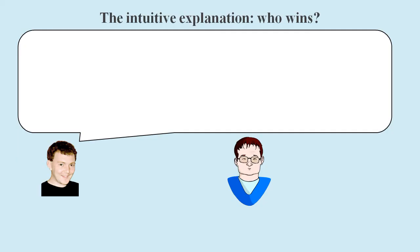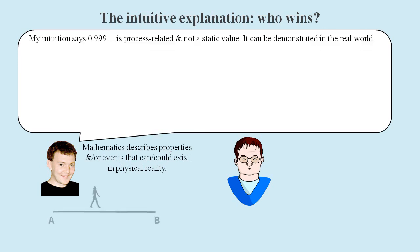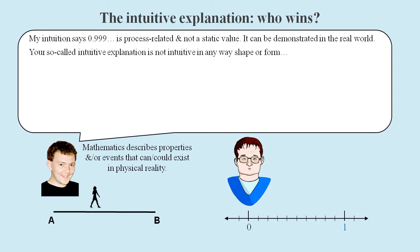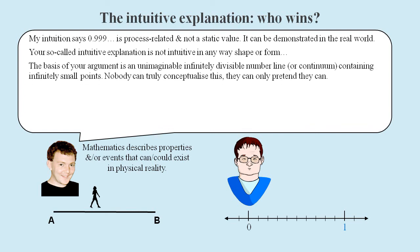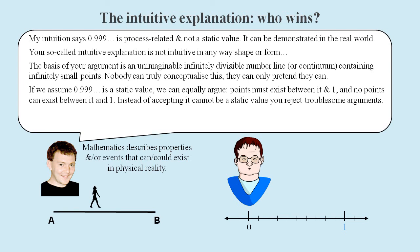So who wins the battle for the best intuitive explanation? As disbelievers, we relate mathematics to physical reality. And 0.9 recurring is process related. Nobody can truly conceptualize infinitely small things. Mathematicians simply reject any troublesome arguments. And they think it's fine to avoid problems by not allowing them to be formally stated.